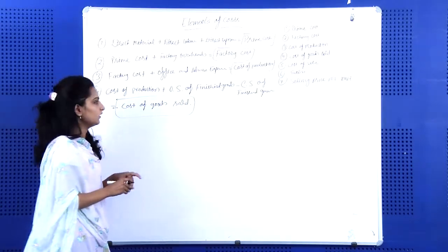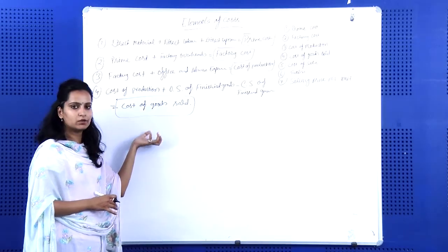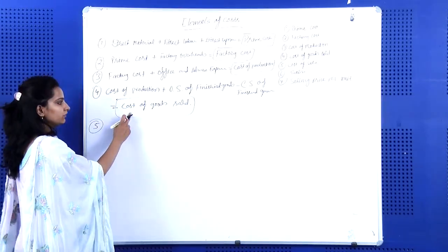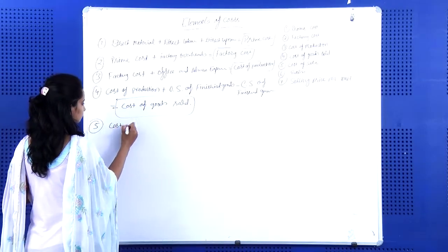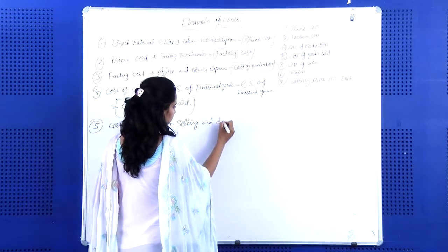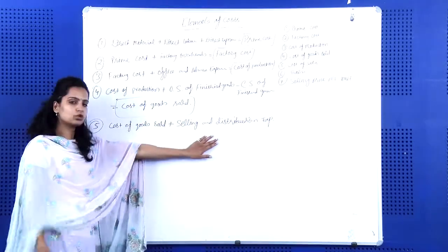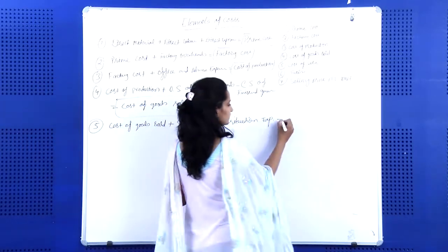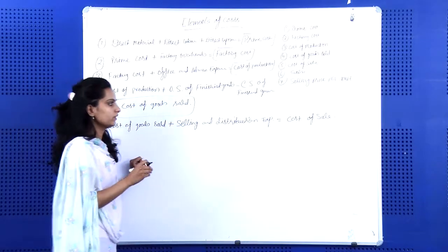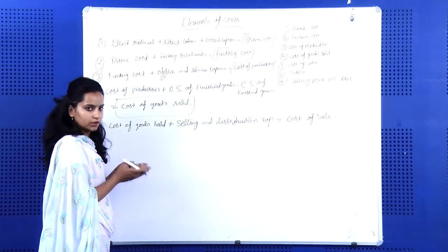Cost of goods sold is a very important element and step in cost analysis, because it includes all major costs and tells us the particular cost for our product. After calculating cost of goods sold, if we add selling and distribution expenses, that becomes our cost of sales — the ultimate cost at which we have sold our product, representing overall cost included in production and sale.